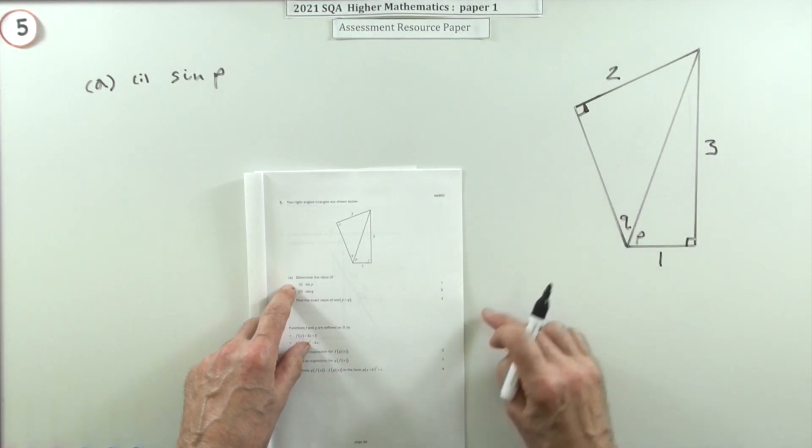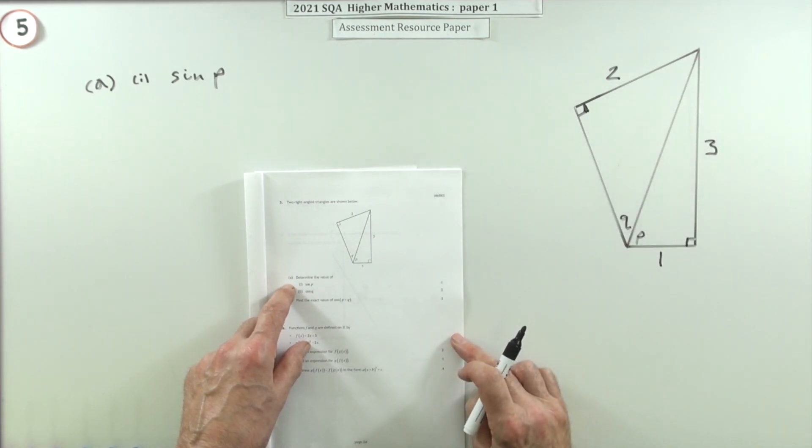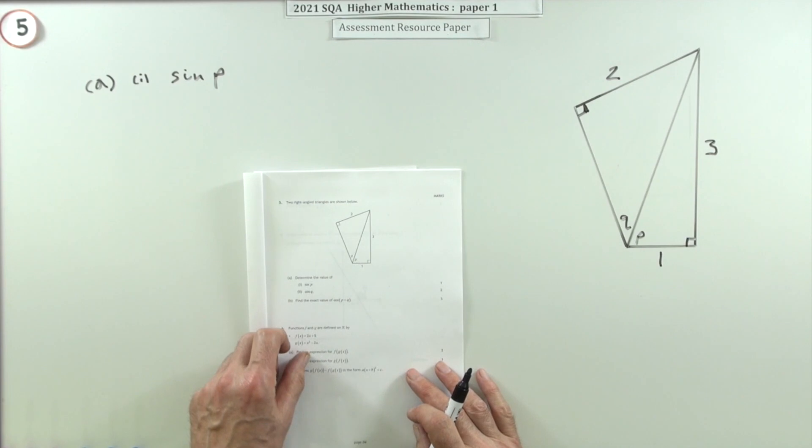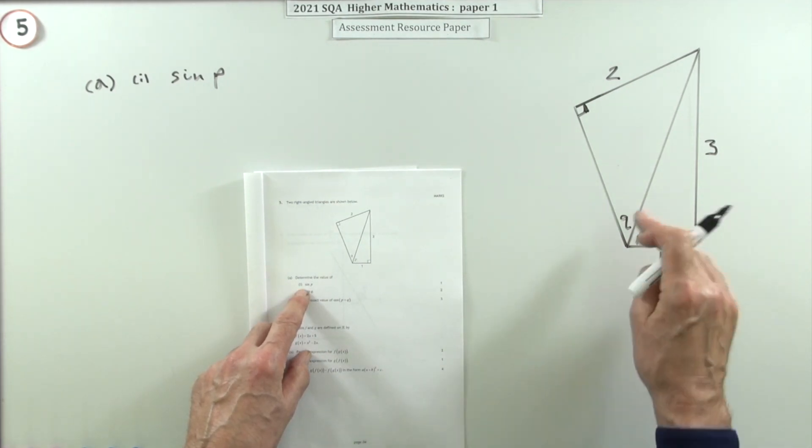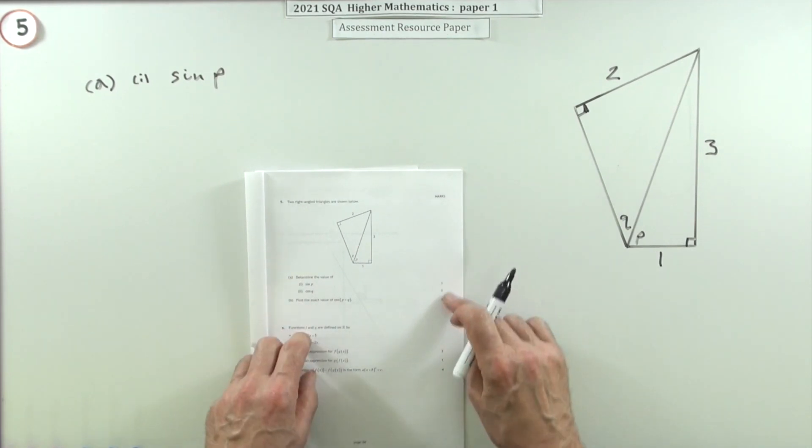For this situation here, you've got these two right-angle triangles joined at their hypotenuse to form that quadrilateral. You have to determine the value of the sine of P and the cos of Q in part A for three marks.